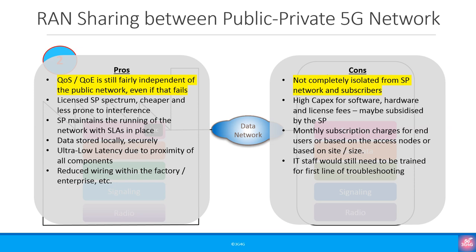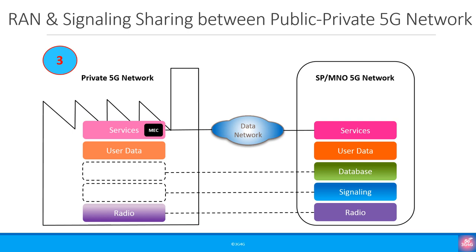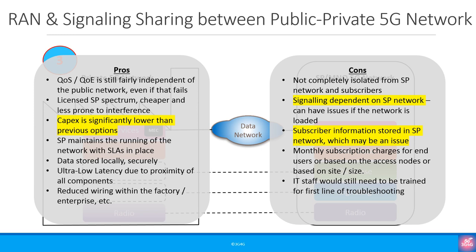Compared to scenario one, in the RAN sharing case the pros include QoS and QoE being fairly independent of the public network. The con is that complete isolation from the public network is gone. In the third case, there is a shared RAN and control plane between the public and the non-public network — the private network relies on signaling and database from the public network. The pro here is that capex is significantly lower than the previous cases. The cons are that signaling is now dependent on the public network, so if that's overloaded the QoE can suffer, and all subscriber information is now stored in the public network database — though user data is still stored locally as shown by the MEC block.